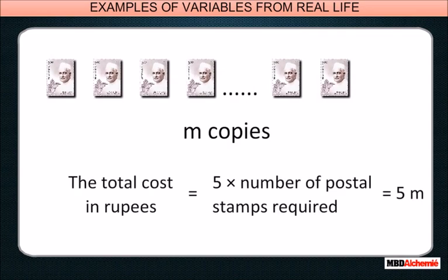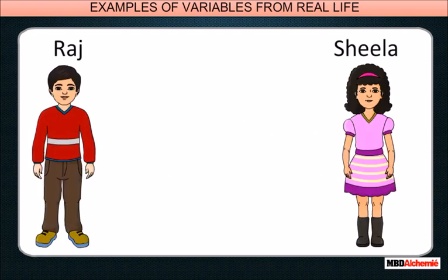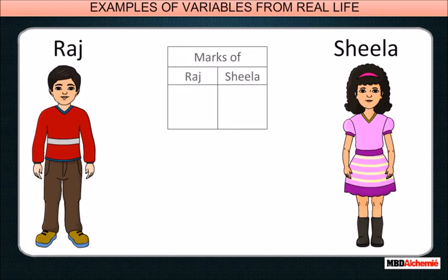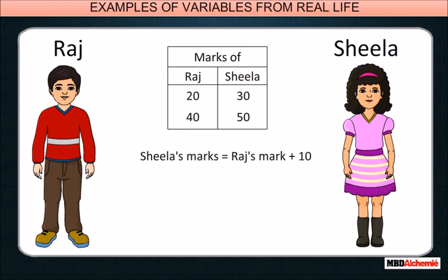Now, Raj and Sheila are two students. Sheila scored 10 marks more than Raj. If Raj scored 20 marks, Sheila scored 30 marks. If he scored 40, she scored 50. So we can say Sheila's marks equals Raj's marks plus 10. Thus, if Raj scores x marks, Sheila scores x plus 10 marks.